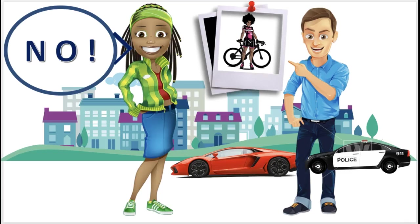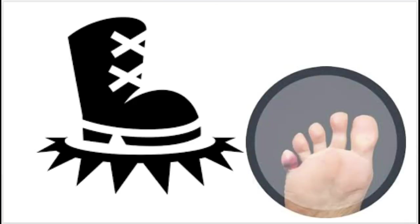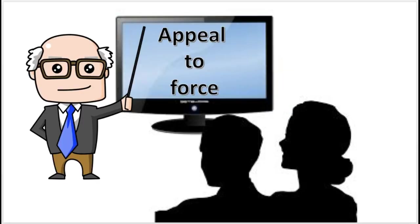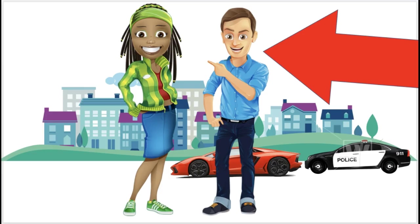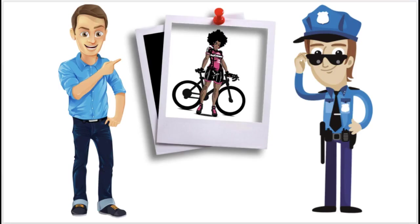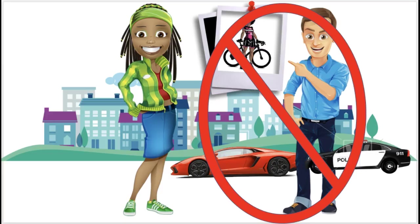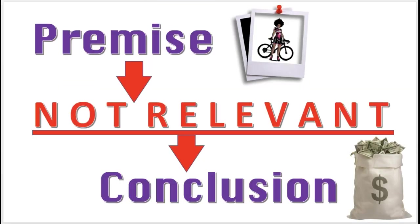Cindy says: 'Oh no, you shouldn't give the picture to the police, because if you do, I'll stomp on your foot and smash your toes.' Jack makes the first appeal to force fallacy when he threatens to show the picture to the police. Now this is a psychological threat. The argument is fallacious because the threat to show the picture to the police is logically irrelevant to the conclusion that Cindy should loan him the money.